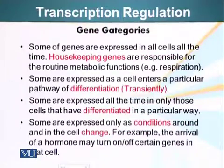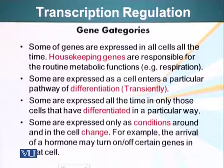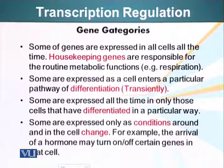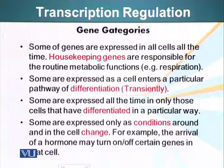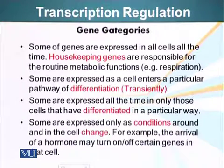First, let's categorize genes into rough categories. The first category would be housekeeping genes. These genes are expressed in all cells at all times and are generally responsible for routine metabolic function. For example, respiratory enzymes, which are present in mitochondria, are expressed in all cells. The cytoskeletal proteins are also always present in all cells.